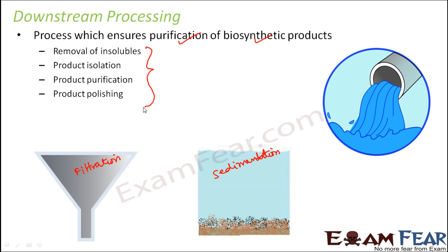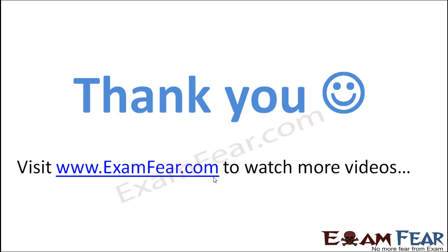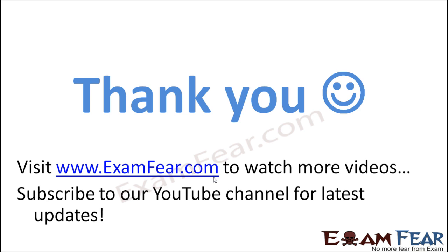So here you saw the entire process of genetic engineering step by step - starting from identifying the desired gene in the DNA, using that gene, transferring it to another organism, and finally producing a new product altogether. This is how genetic engineering works. Thank you - please visit examfear.com to watch more educational videos, and don't forget to like and subscribe for latest updates.